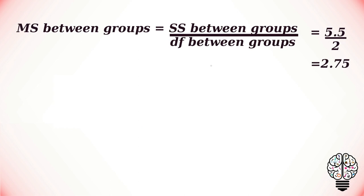Now we are going to find the mean of squares between groups. To do that, we have to divide the sum of the squares between groups by the degrees of freedom between groups. That is 5.5 divided by 2 gives us 2.75.